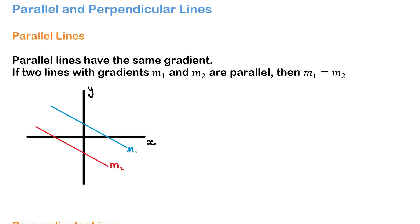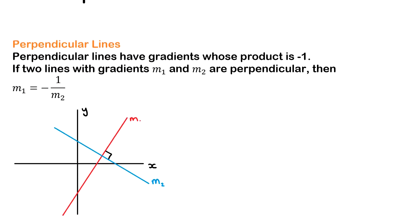In this video we're covering parallel and perpendicular lines. The first one we're going to cover is parallel lines. These are lines that have the same gradient. If two lines with gradients m1 and m2 are parallel, then m1 equals m2. As you can see in that diagram, they're equal distance apart the entire way, but the gradients are the same.